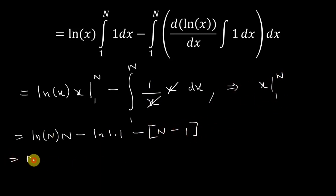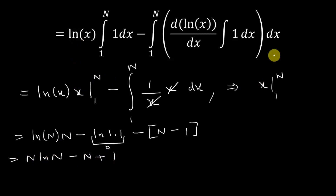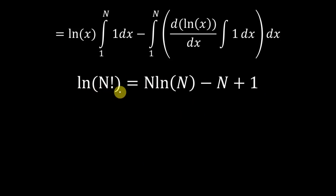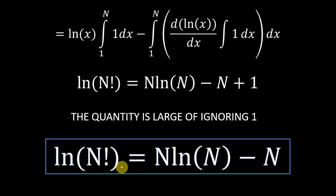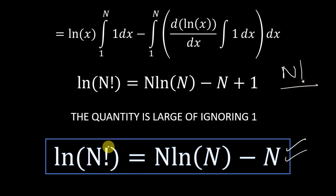Putting in the limits: ln of N times N (upper limit) minus ln of 1 times 1 (lower limit), minus x evaluated from 1 to N, giving N minus 1. Since ln of 1 is 0, that whole term is 0, leaving N ln N minus N plus 1. This comes out to be N ln N minus N plus 1. Since this is already an approximation, we can ignore the 1. So ln of N factorial equals N ln N minus N, which is Stirling's approximation. Whenever in statistical mechanics we have N factorial, we take its logarithm and write it as N ln N minus N, and this solves our big number problem. In further derivations you will see how this solves our problem. So this was the derivation of Stirling's approximation.